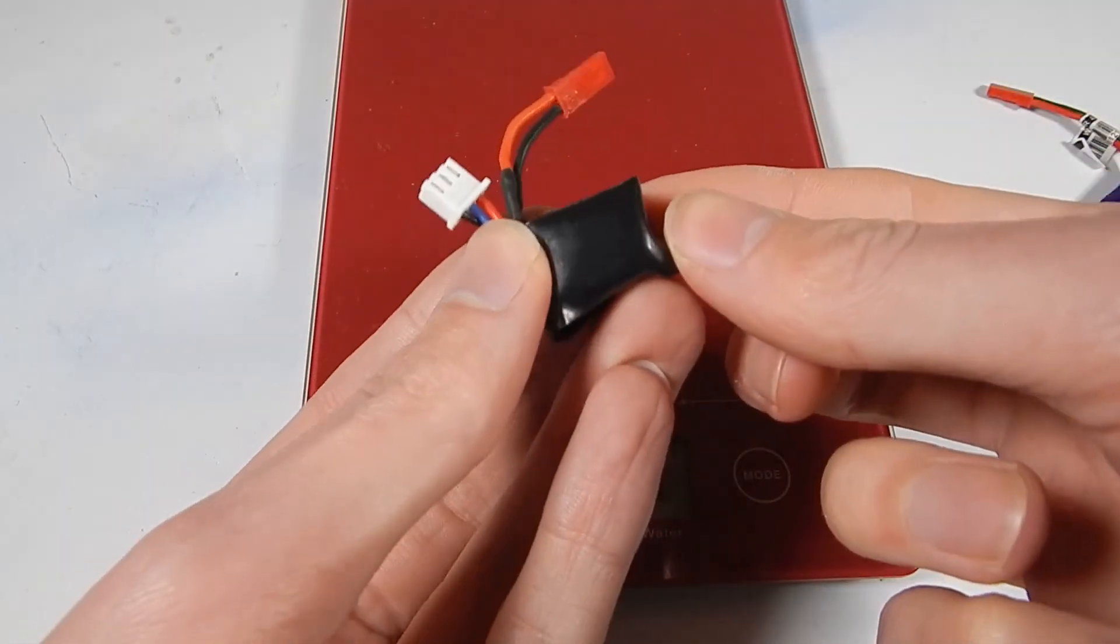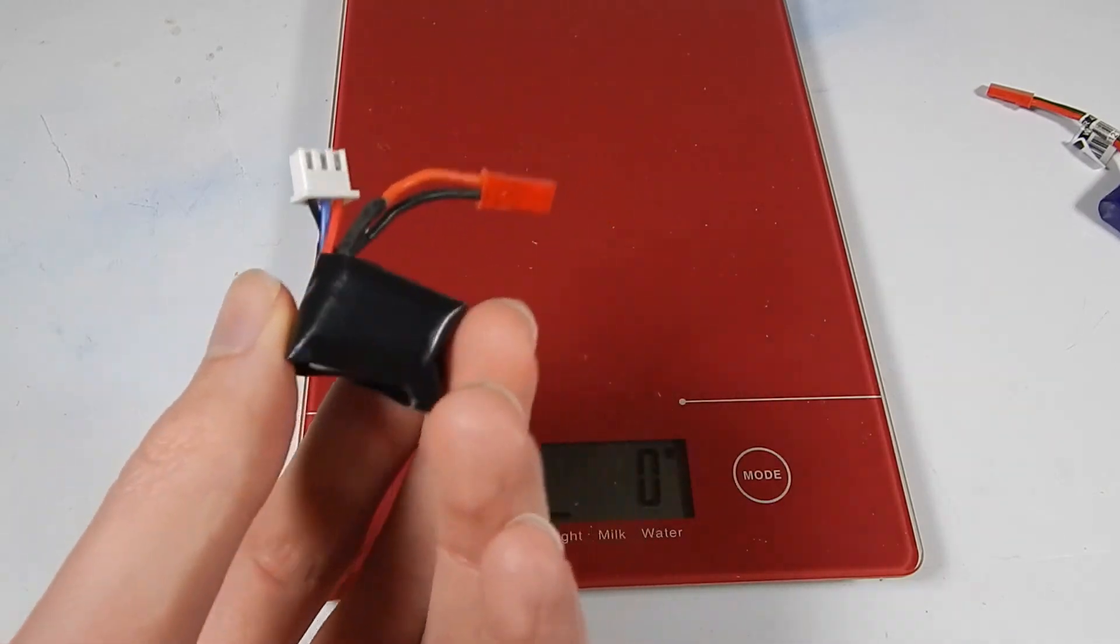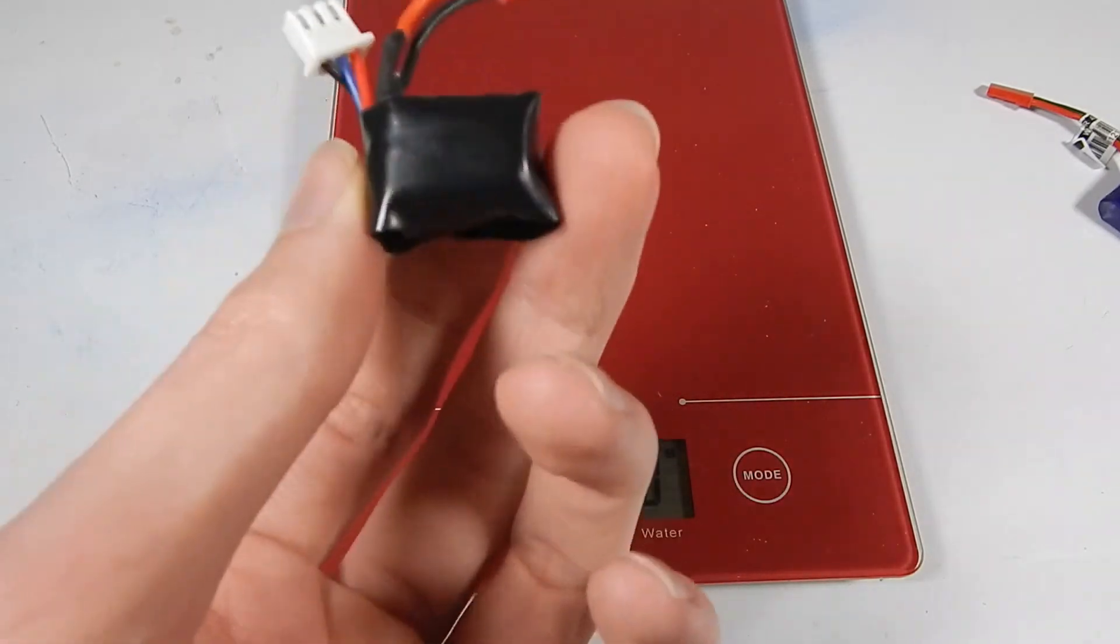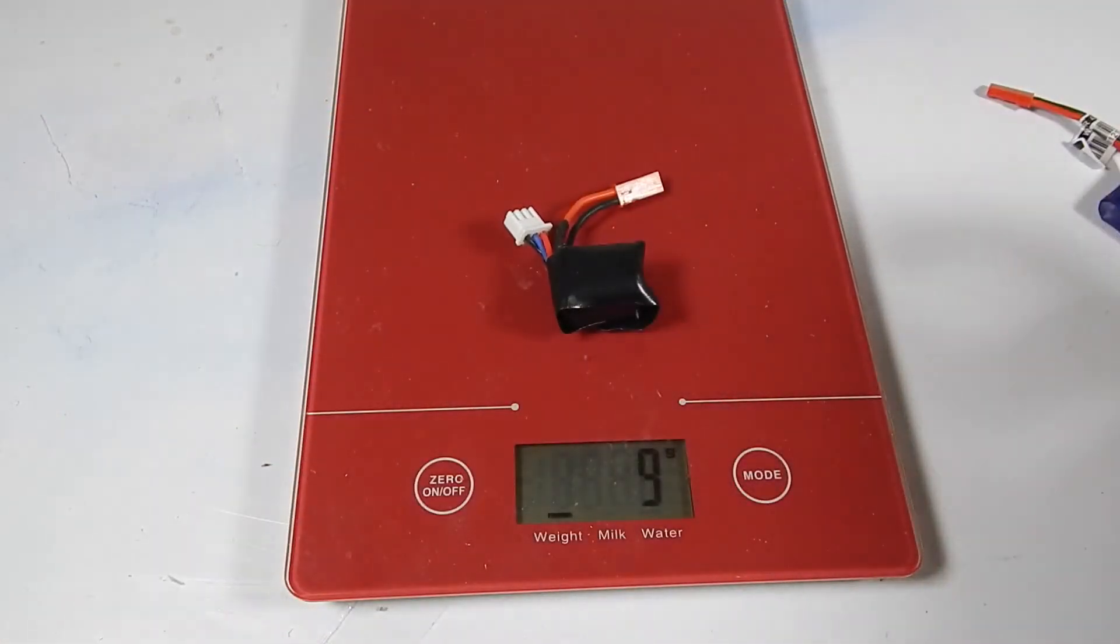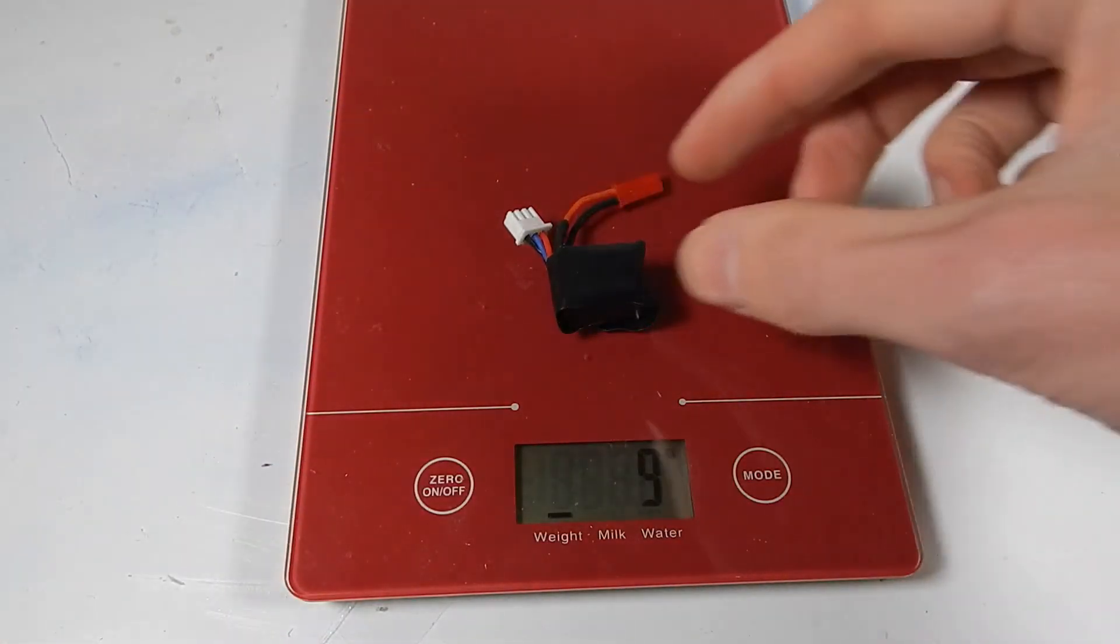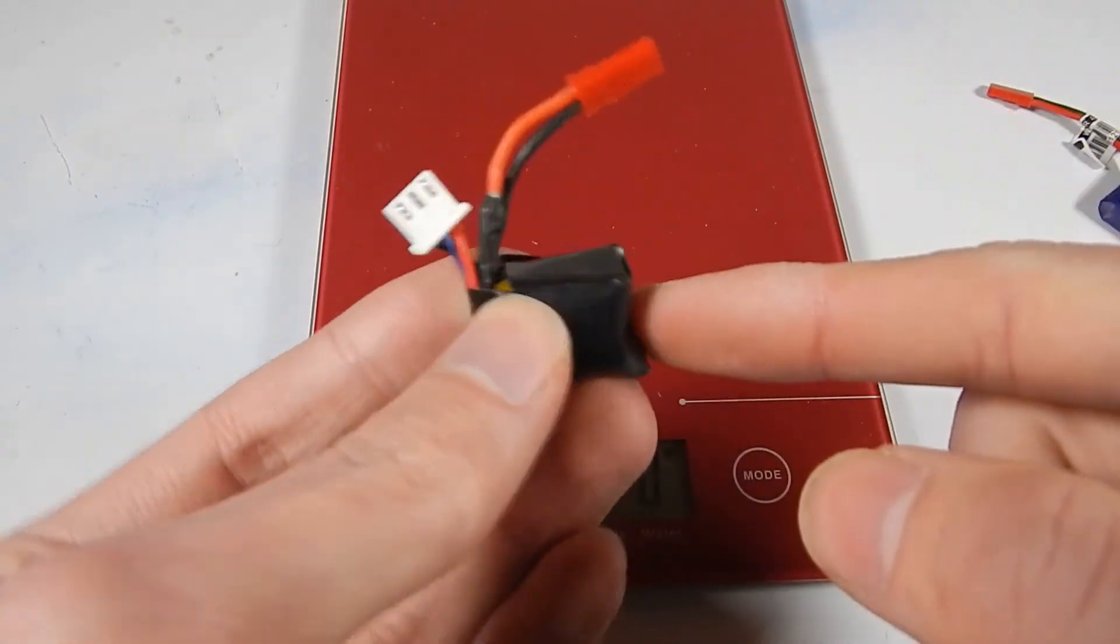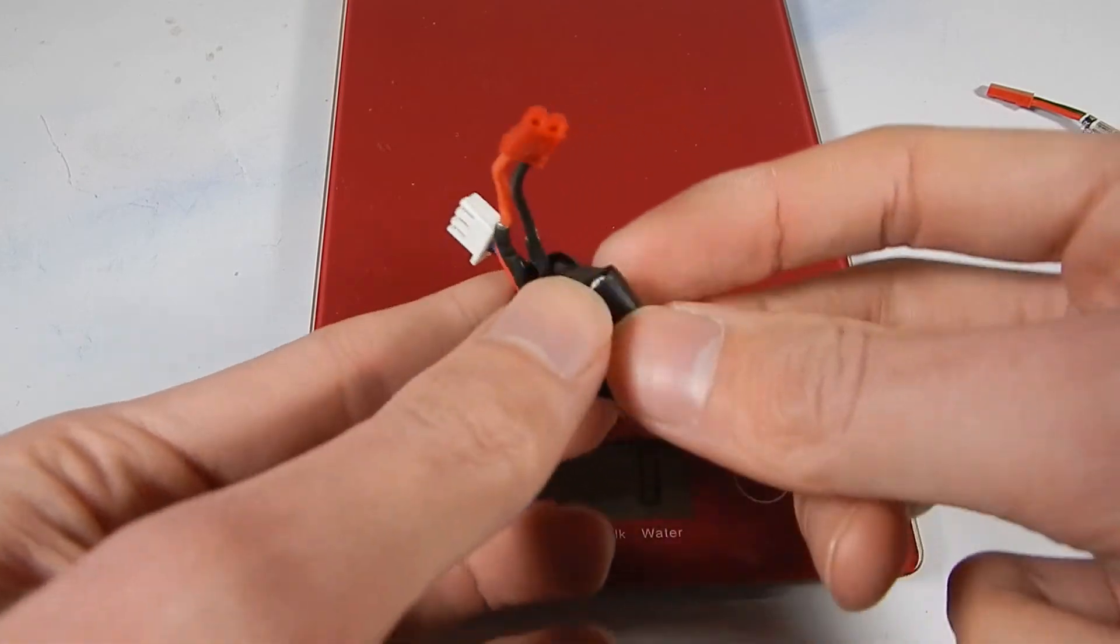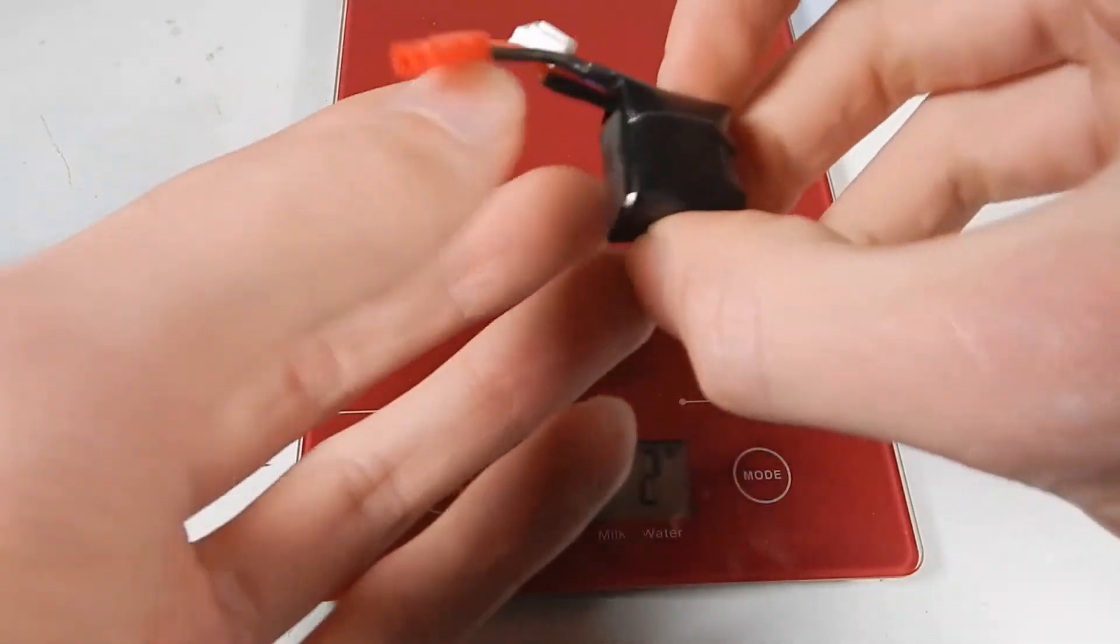Eventually I want to build flea weight robots which are 75 grams and then nano weight robots which are 25 grams. This pack won't go into a nano weight robot, 8 or 9 grams is too heavy for a nano weight robot but maybe one of those cells will go into that robot I should say. But there we go.